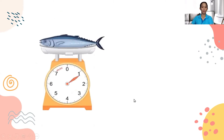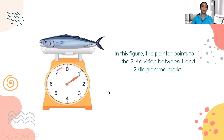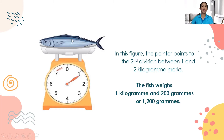Another example. We have here a fish. In this figure, the pointer points to the 2nd division between the 1 and 2 kilogram marks. So we can say that the fish weighs 1 kilogram and 200 grams, or 1,200 grams.